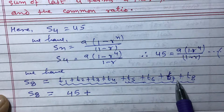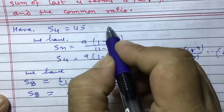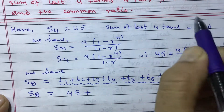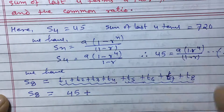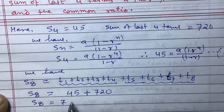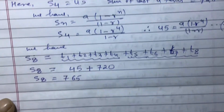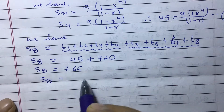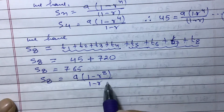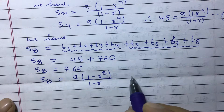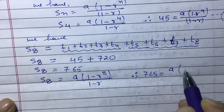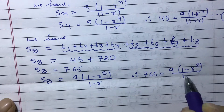The sum of the last four terms is 720 as given. So S₈ = 45 + 720 = 765. Applying the formula again: S₈ = a(1 − r⁸) / (1 − r). Therefore 765 = a(1 − r⁸) / (1 − r). This is equation 2.